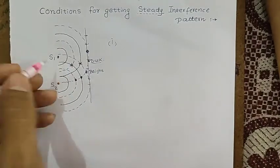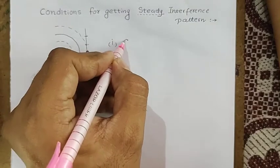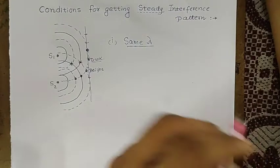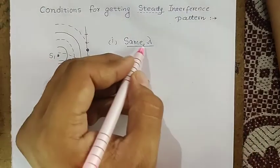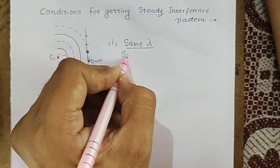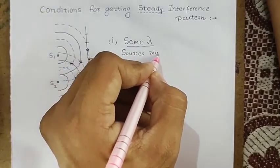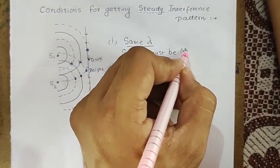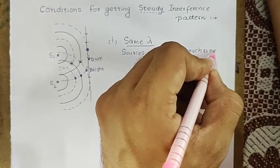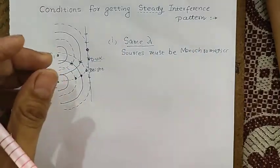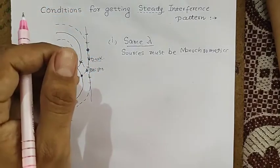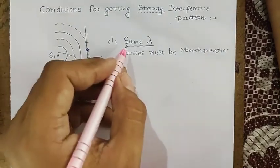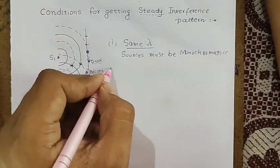The first condition is that the waves coming from the two sources must have the same wavelength. S1 and S2 must emit light of the same wavelength. That's why sources must be monochromatic. If the wavelengths are not equal, the bright and dark points will not be equally spaced and you will not get a good, proper interference pattern.